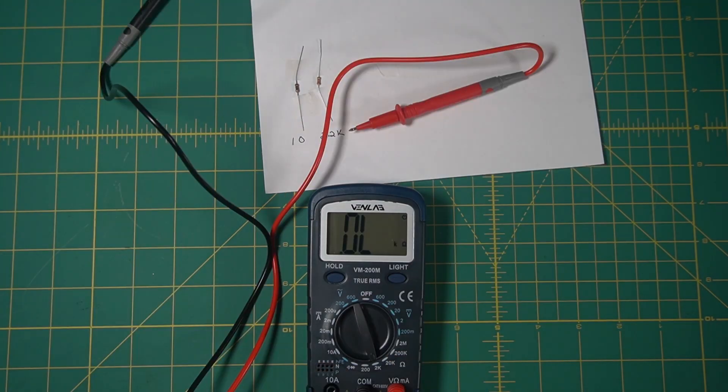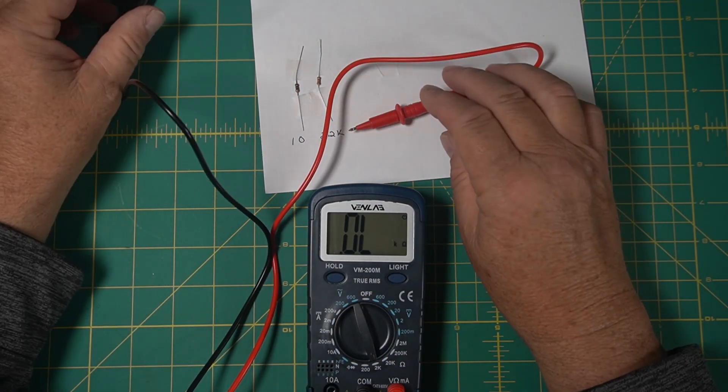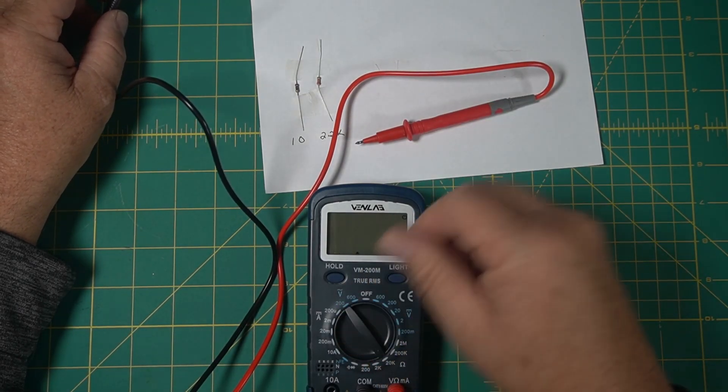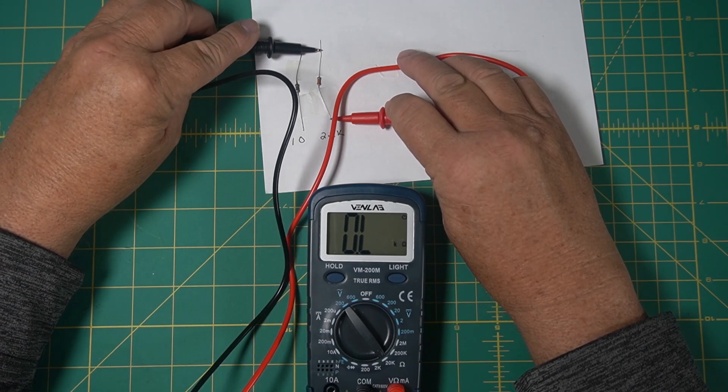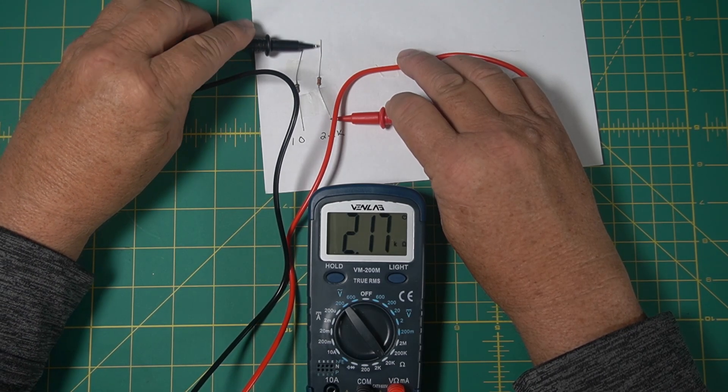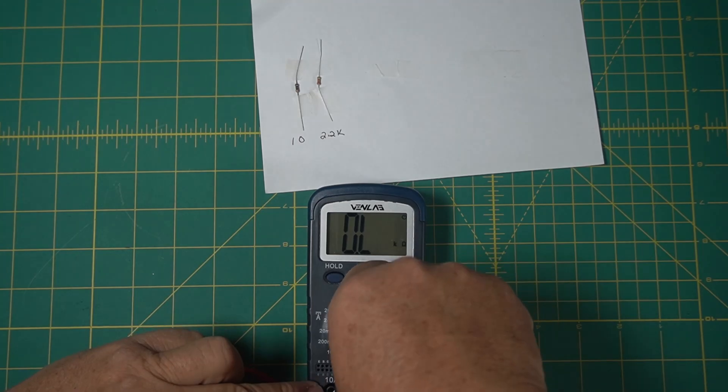The next one is 2.2K. OL means overload. So we're going to go to 20K and we should read it there. 2.17. That's good.